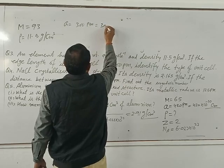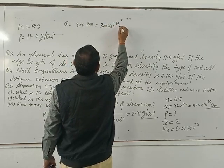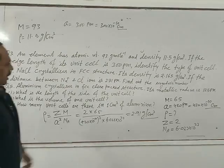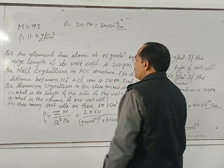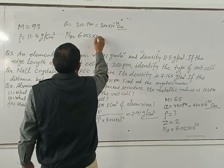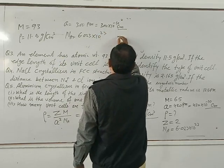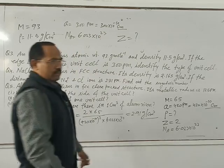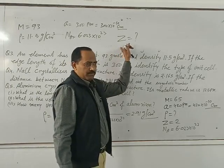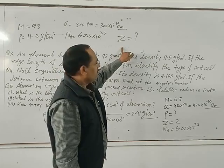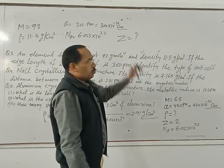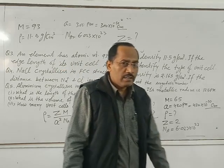The lattice parameter a equals 300 times 10 to the power minus 10 centimeters. With Avogadro's number N equal to 6.023 times 10 to the power 23 and Z calculated to be 100 — wait, using the formula to find Z: if Z equals 1, the type of unit cell is simple cubic; if Z equals 2, it is BCC; if Z equals 4, it is FCC.